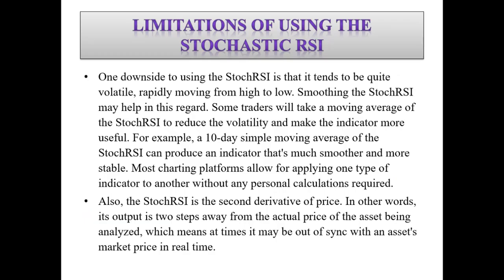Now for the limitations: one downside is that the Stochastic RSI tends to be quite volatile, rapidly moving from high to low. To smooth this, some traders apply a moving average — for example, a 10-day simple moving average of the Stochastic RSI — to produce an indicator that is much smoother and more stable. Most charting platforms allow you to apply one indicator on top of another without any personal calculations required.